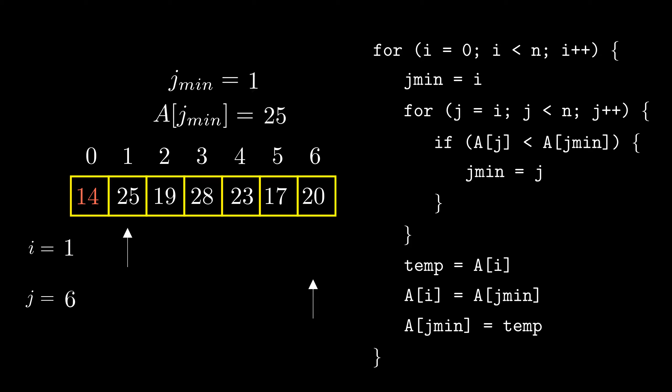we increment i to 1 and iterate j from 2 to 6. This time we find jmin to be 5 because 17 is the smallest element in the remaining array. We swap 17 with the element at index 1. We keep on incrementing i and finding the smallest element from the ith element onwards and swap it with the element at the ith location. When i reaches 6, the array is sorted.